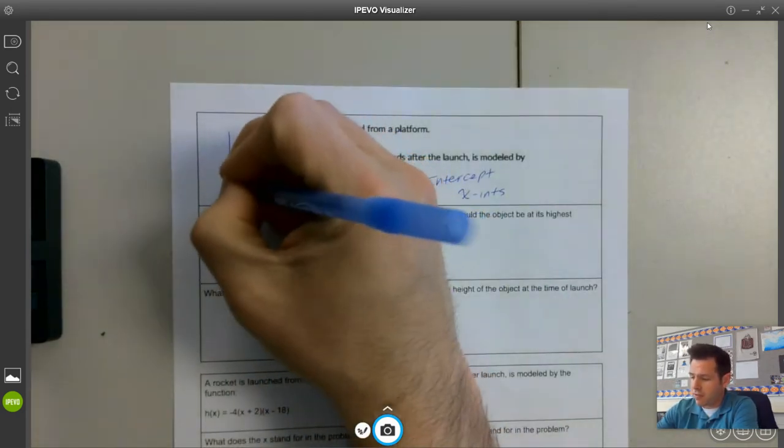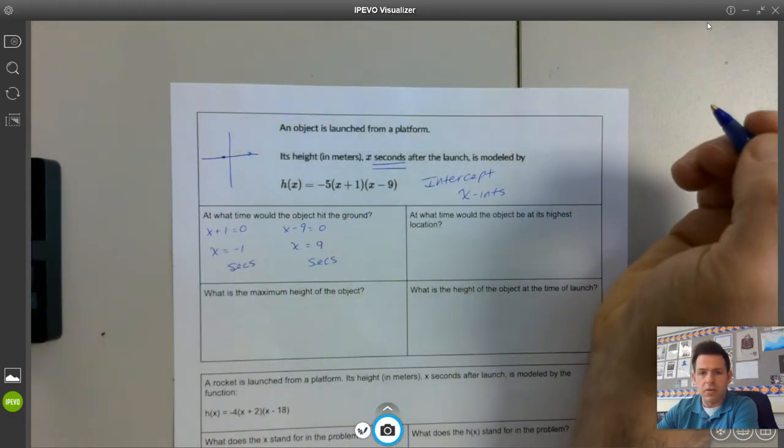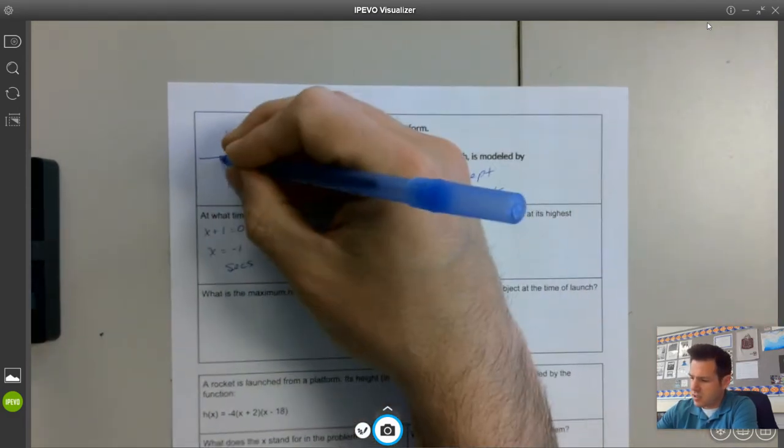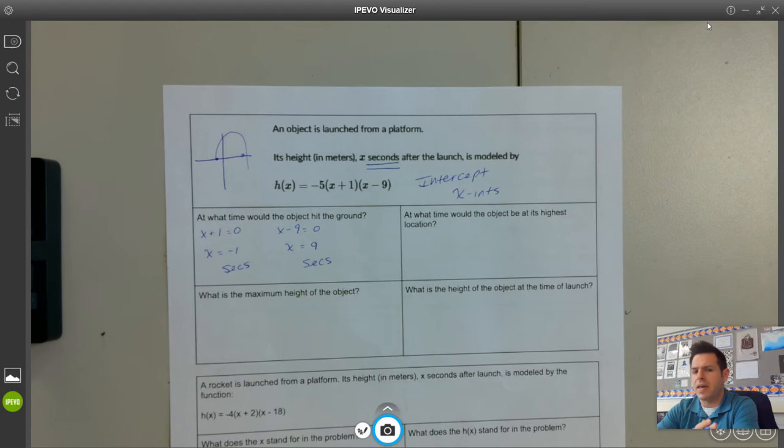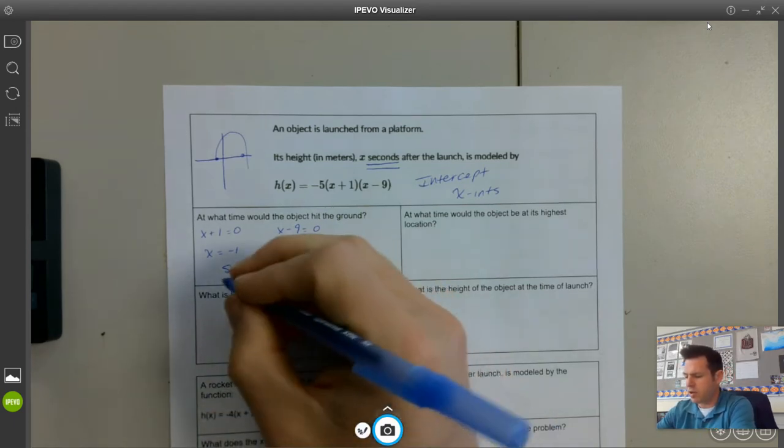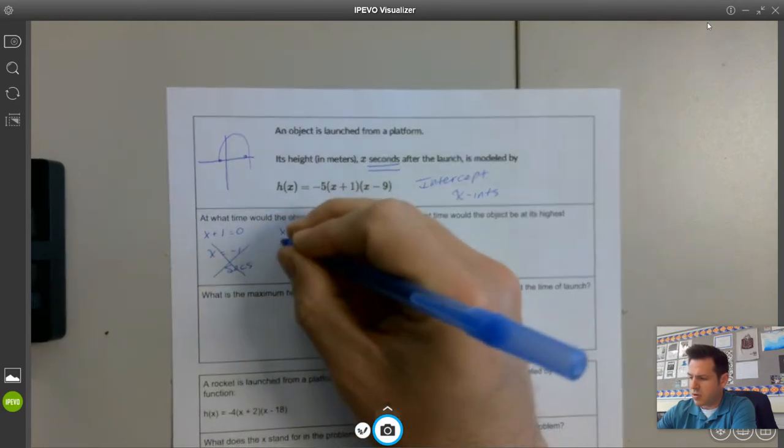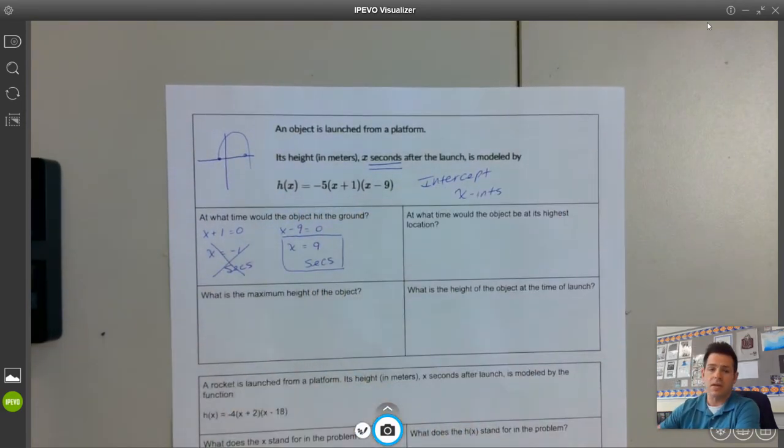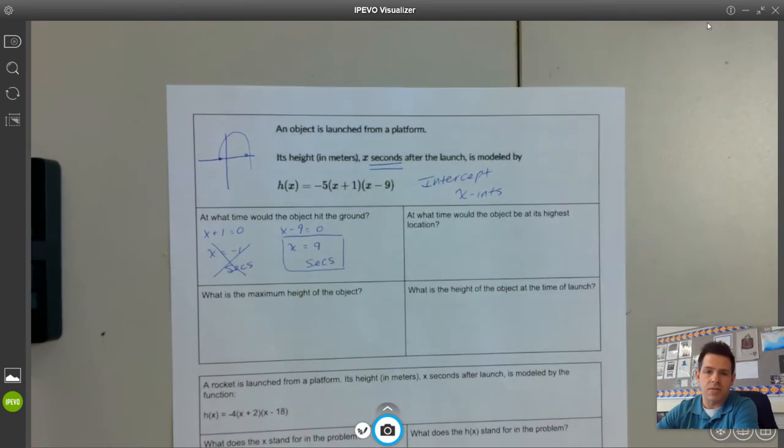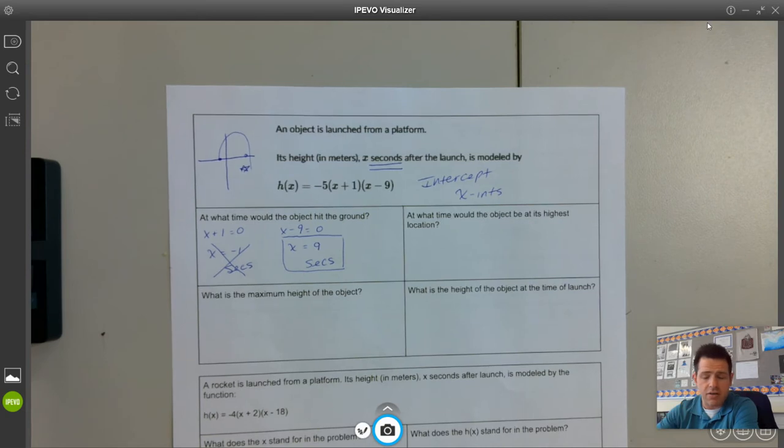If we were on the graph, our parabola would look something like this, go up like that. But we know that there is no such thing as negative time. So even though algebraically this negative one is an answer, we're not going to consider it as part of this application problem, which would leave us with only nine seconds as a potential. That would be this location right here on the graph.